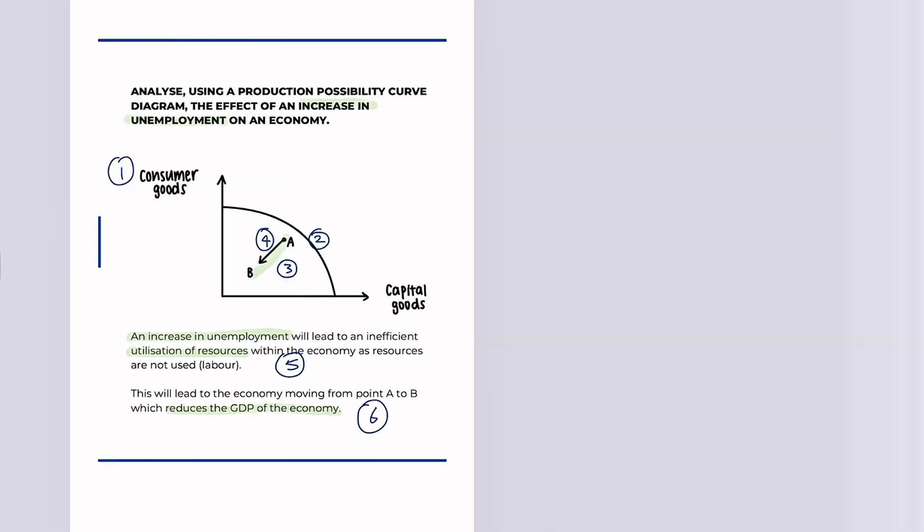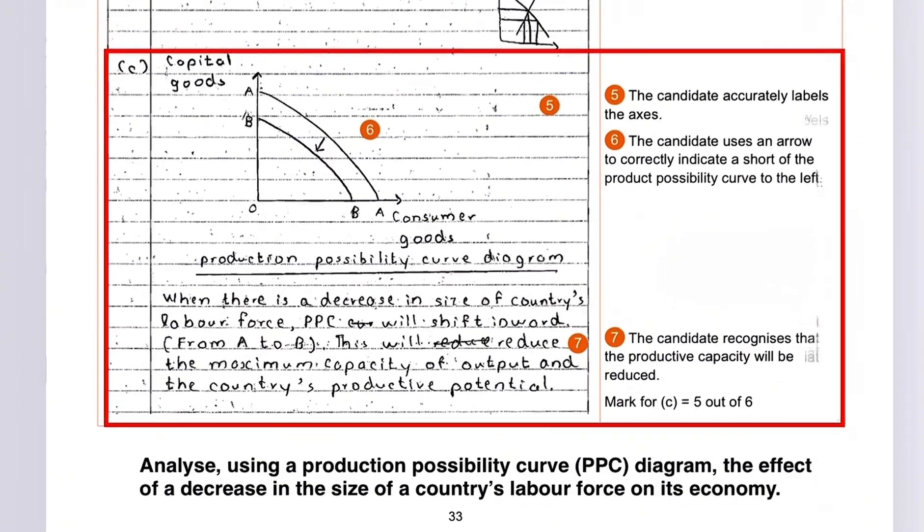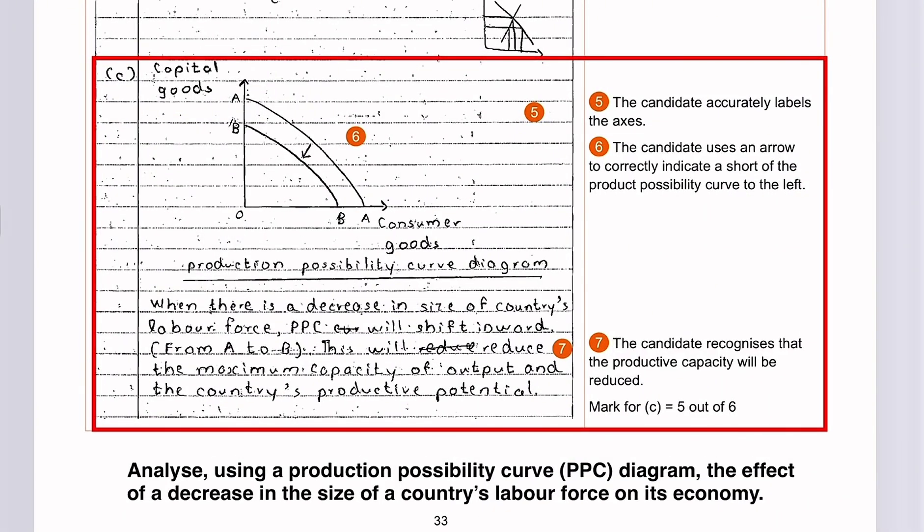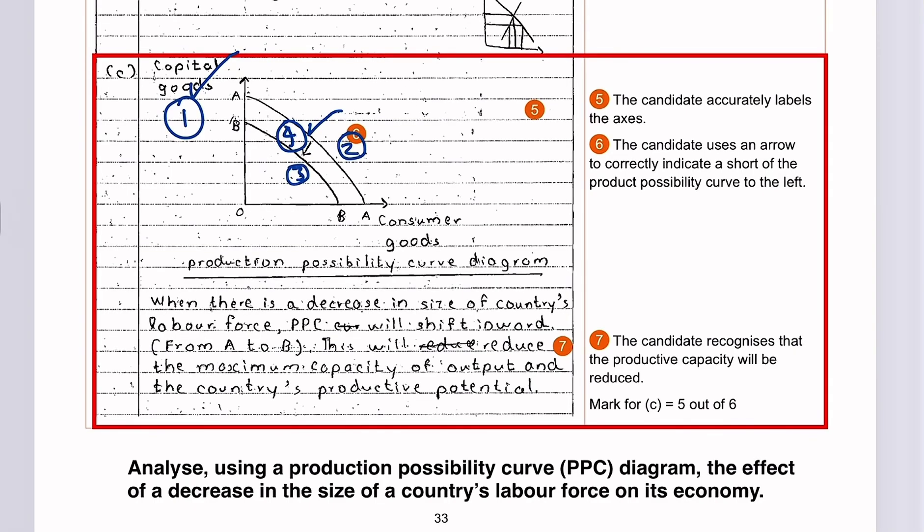Moving on to the next one. So the question here is, analyse using a production possibility curve diagram the effect of a decrease in the size of a country's labour force on its economy. So just having a look at how the marks are allocated for the diagram, as per usual. One mark for the labelling of axes, one mark for the original curve, one mark for the new curve, and one mark for the arrow.